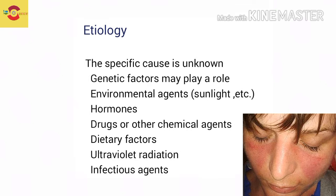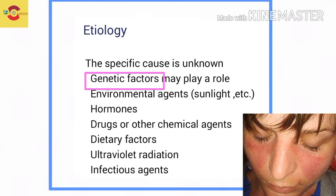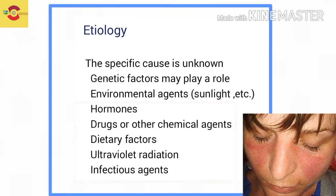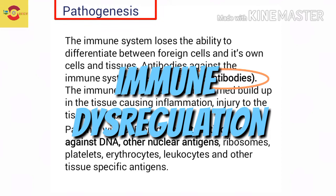The etiology of Systemic Lupus Erythematosus - the specific cause is still unknown, but it is believed that genetic factors may play a main role. Environmental agents like sunlight, hormones, drugs or other chemical agents, dietary factors, ultraviolet radiation, and infectious agents also have a role.